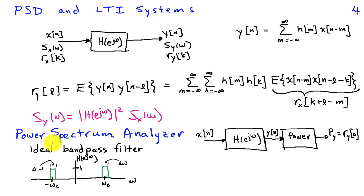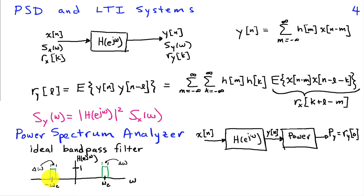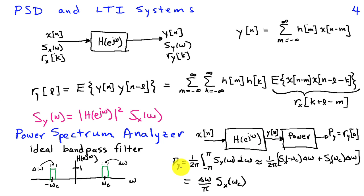This property can be used to build a power spectrum analyzer. To measure the power spectrum of an input signal x of n, pass it through an ideal narrow-band bandpass filter with unit response in a small band of width delta omega centered at omega_c, and also at minus omega_c. The output power p_y is then the integral from minus pi to pi of S_y of omega d omega divided by 2 pi.